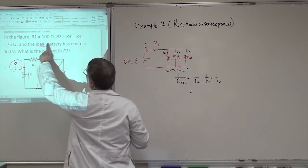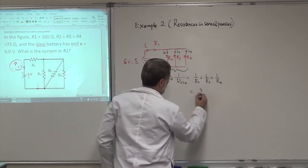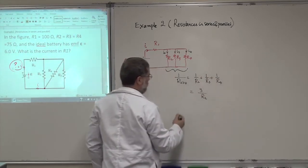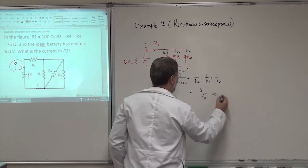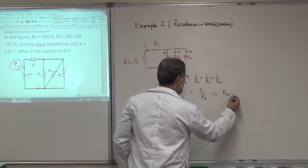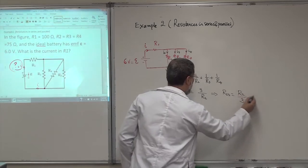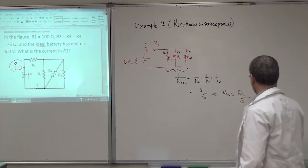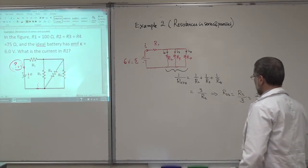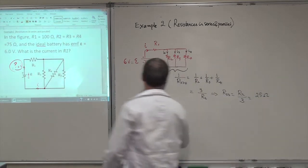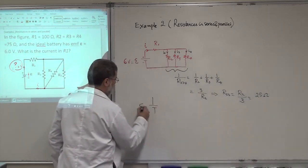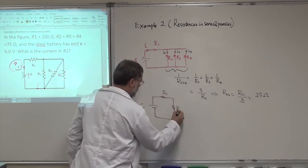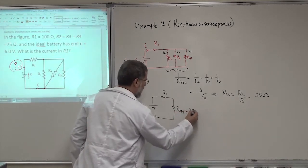Because the three resistances are equal, 1/R₂₃₄ = 3/R2, so R₂₃₄ = R2/3 = 75/3 = 25 ohms. Now I redraw the circuit: the EMF source, R1 = 100 ohms, and R₂₃₄ = 25 ohms. These two are clearly in series — the same current passes through them.